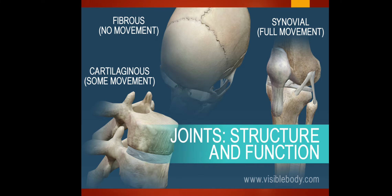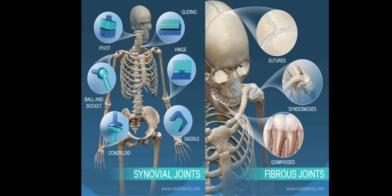This illustration of the muscular system will show you the parts of the joints, their structure, and their function. For example, fibrous joints have no movement. Synovial joints have full movement. Cartilaginous joints have some movement. That is the illustration pertaining to joints.